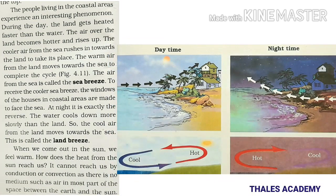The people living in coastal areas experience an interesting phenomenon. During the day, the land gets heated faster than the water. The air over the land becomes hotter and rises up. The cooler air from the sea rushes in towards the land to take its place, and the warm air from the land moves towards the sea to complete the cycle.